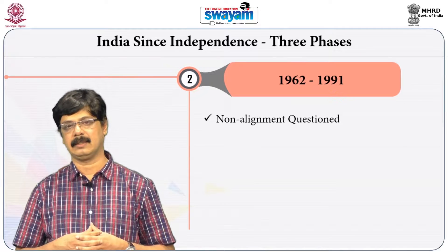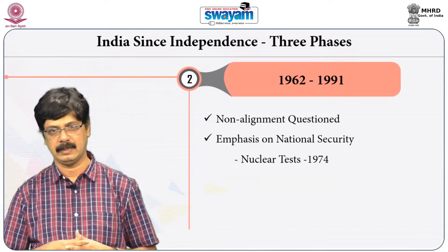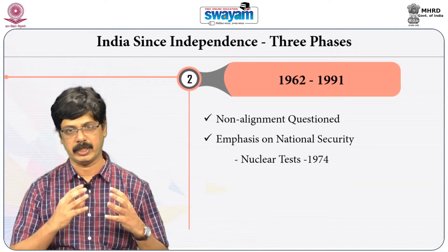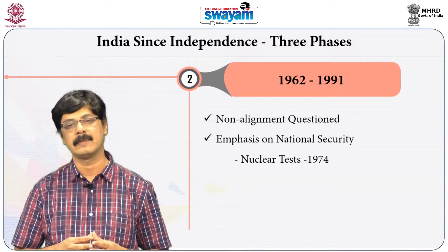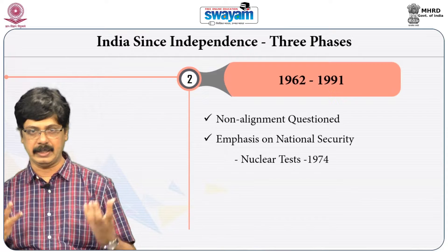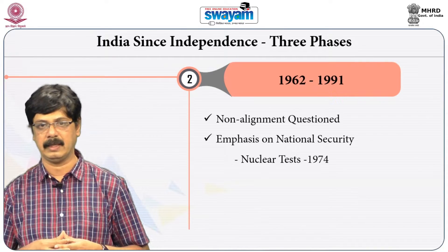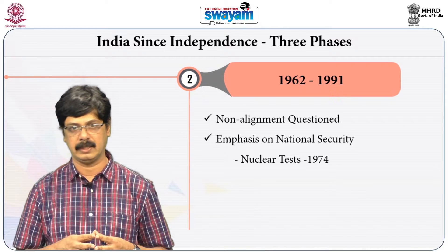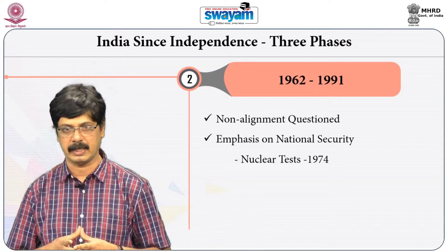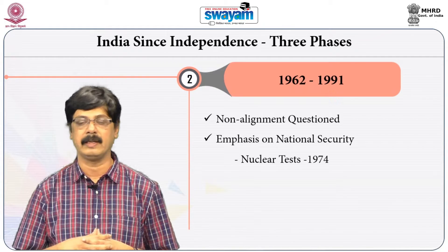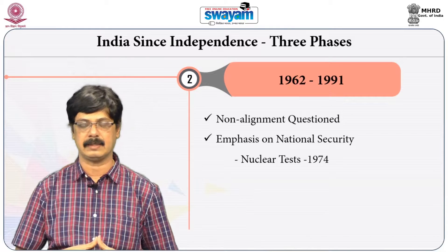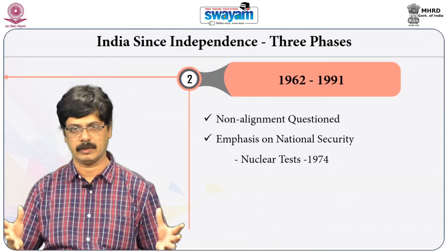The third phase of India's foreign policy, which started in 1962 and ended in 1991, was shaped by India's own experience with the India-China war in which India was defeated at the hands of the Chinese. To a large extent, there were questions and interrogations about the emphasis on non-alignment. Non-alignment was broadly questioned in this period. As a consequence, there was an emphasis on national security, and India went into national security infrastructure building — for instance, the establishment of various intelligence agencies, joint armed commands, and so on.